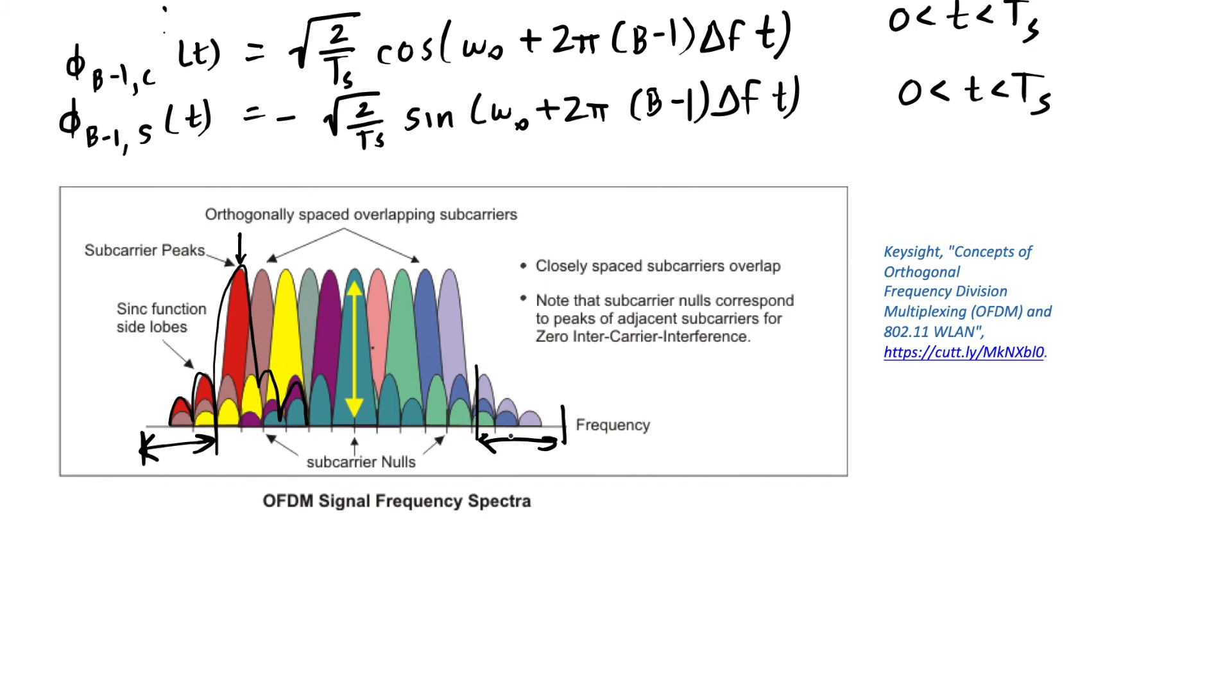even with this extra spectrum being included on the end. So it ends up being worth it to add an extra window of spectrum at the end of our signal in order to overlap these subcarriers in the frequency domain and still have them orthogonal.